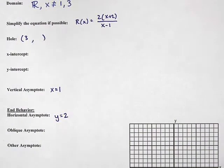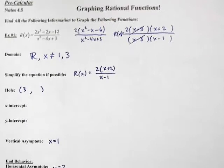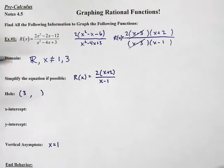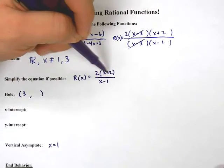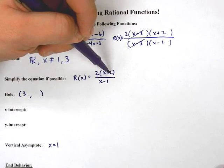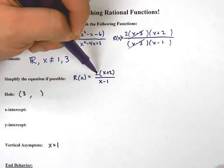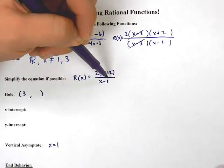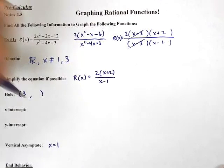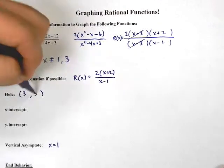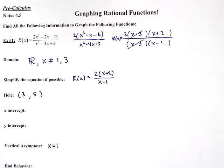I can also figure out end behavior. Looking at the original or the simplified form, I have the same degree in the top and bottom — same degree. So we look at the ratio of the leading coefficients: 2 over 1, which gives us 2. So I know there's going to be a horizontal asymptote at y equals 2. Now we need to figure out the y-value of the hole. We plug in x equals 3: 3 plus 2 is 5, times 2 is 10, divided by 2 is 5. So the hole is at (3, 5).